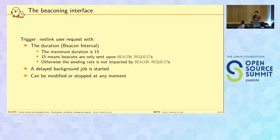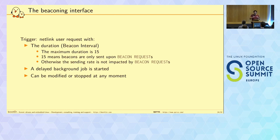The beaconing interface works similarly. You provide a duration; the maximum is 15. Below 15 you provide a real beacon order which sets the beacon interval. If you provide 15, it means: only answer beacon requests. By default a coordinator in the Linux kernel will not send any beacons; you use this command to either send beacons at a given rate or only respond to beacon requests.